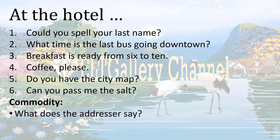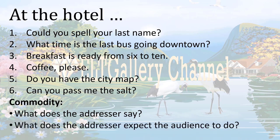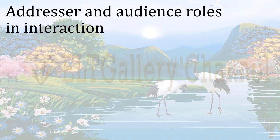So commodity is what the addresser says — it can be information, it can be an object, or it can also be a service. In these examples we only have information and object. We can also identify what the addressers expect the audience to do. In an interaction, the addresser and the audience have different roles — they cannot have the same roles at the same time, because there is no interaction if they have the same roles at the same time.